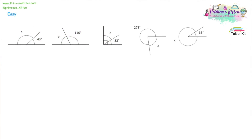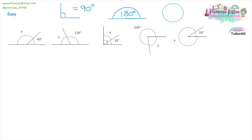We're gonna have a look at angle facts. There are three main facts you need to remember. The first fact is that a right angle, shown with a square shape, is equal to 90 degrees. The second fact is that if you see a straight line with angles on it, those angles add up to 180 degrees. The third fact is that if you have angles around a point in a circle shape, that is equal to 360 degrees. All these questions — straight lines, right angles, circles — use the same method, and that continues into triangles and quadrilaterals as well.